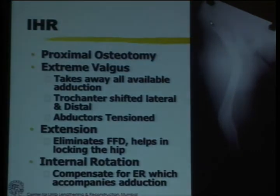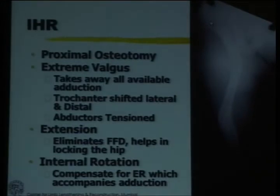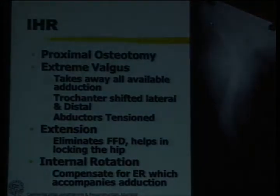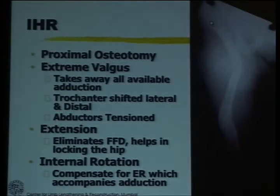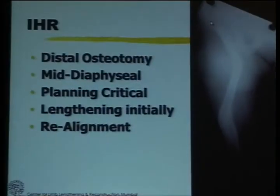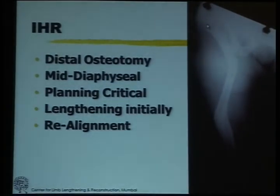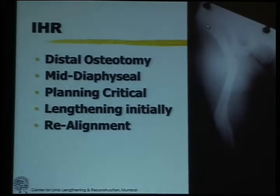This is a three-dimensional osteotomy. In addition to the abduction, you give a certain amount of extension which eliminates the fixed flexion deformity, and by the ligament of Bigelow, it helps to lock the hip when the patient is walking. Also, the internal rotation which occurs whenever you do an extreme amount of adduction can be compensated by putting in a certain amount of external rotation. The distal osteotomy is usually mid-diaphyseal. The planning is critical, and you do just the lengthening to restore the length initially, and at the end you can realign it so that the axis from the hip to the ankle passes through the center of the knee.